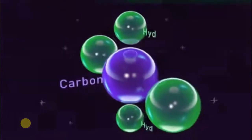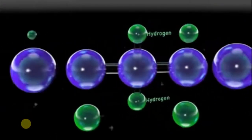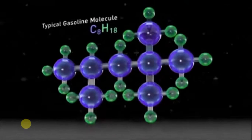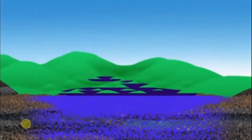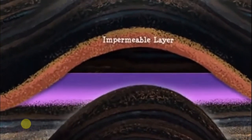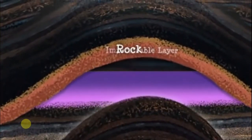At the molecular level, oil and gas are hydrocarbons made up of hydrogen and carbon atoms. The constant pressure and movement of the Earth's crust squeezes oil and gas through the pores or spaces within rocks. Some oil and gas reaches the Earth's surface and seeps out naturally into land or water. Often it is trapped beneath the surface by impermeable layers or rock structures like faults and folds.